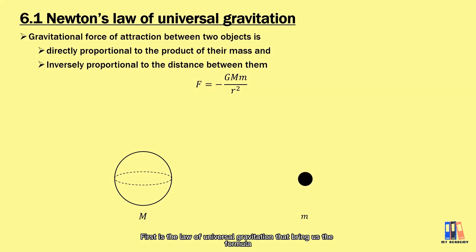First is the law of universal gravitation that brings us the formula of attraction force between two objects in the universe. It states that the force is directly proportional to the product of two masses and inversely proportional to the distance between two objects.